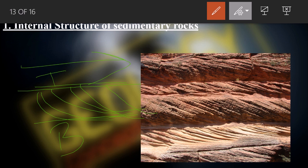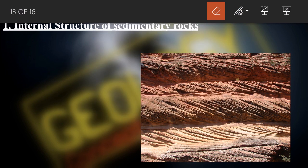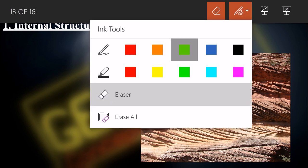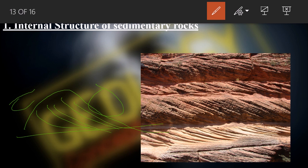Sediment moves from upstream or windward direction toward the downstream or leeward direction. In a dune, for example, the windward side and the leeward side can be identified, and cross beddings are visible along this direction. These cross beddings help in understanding the flow direction, and if they are truncating at the top, that is the younging direction.